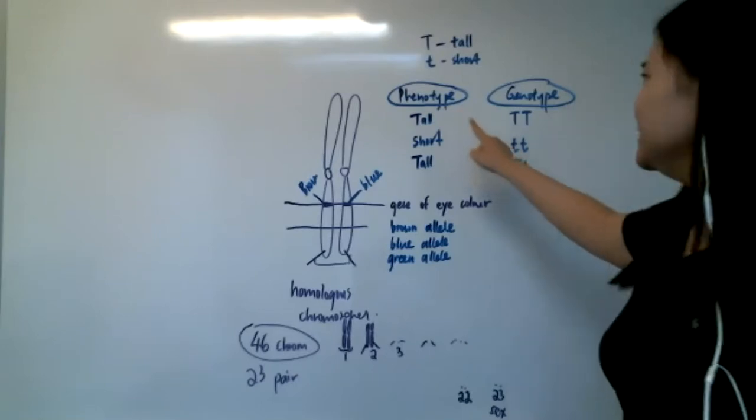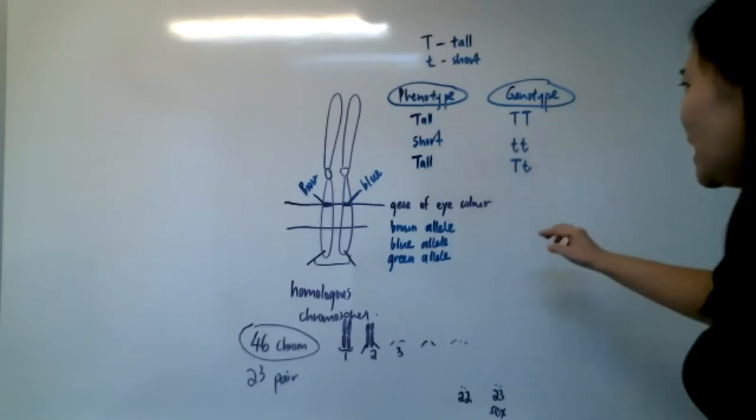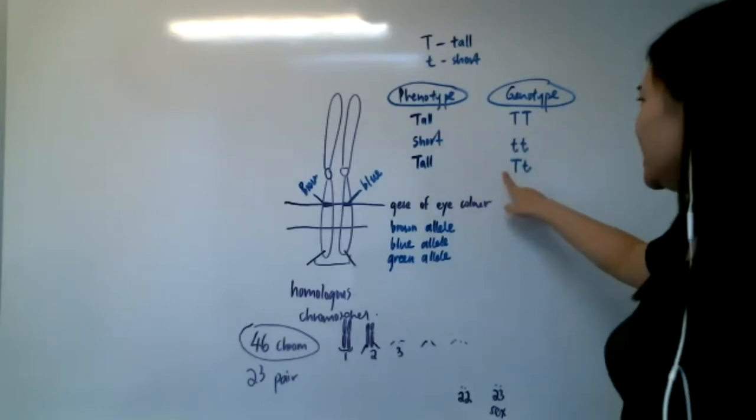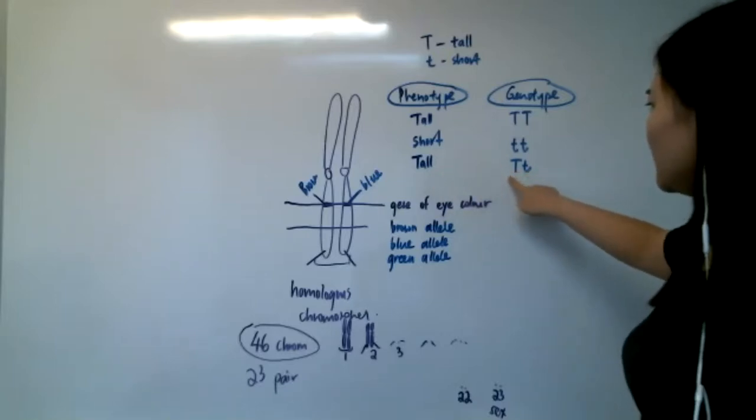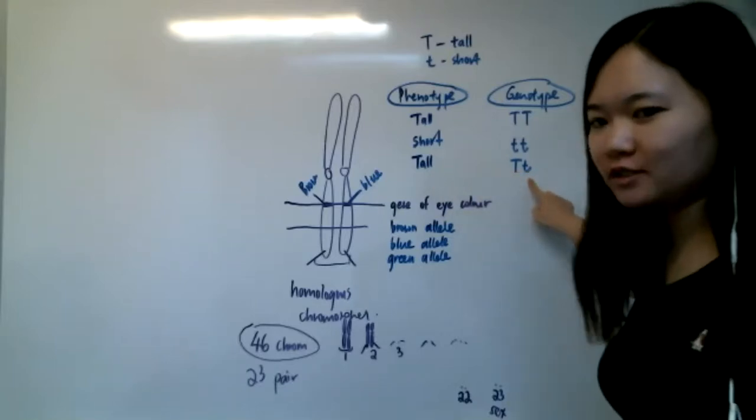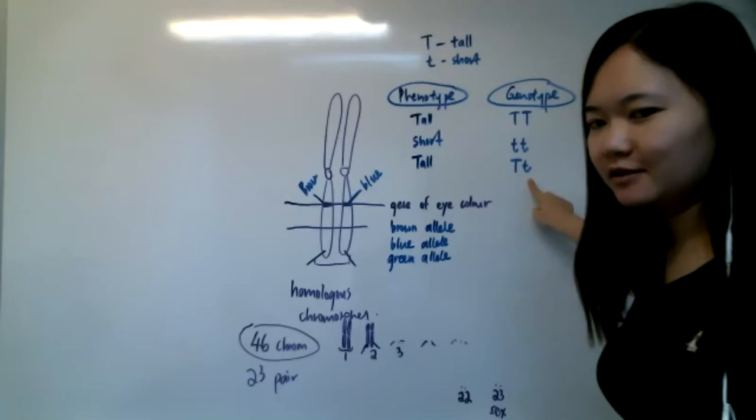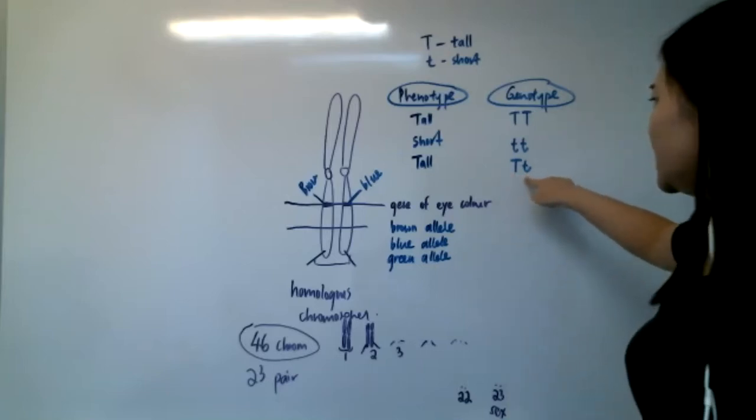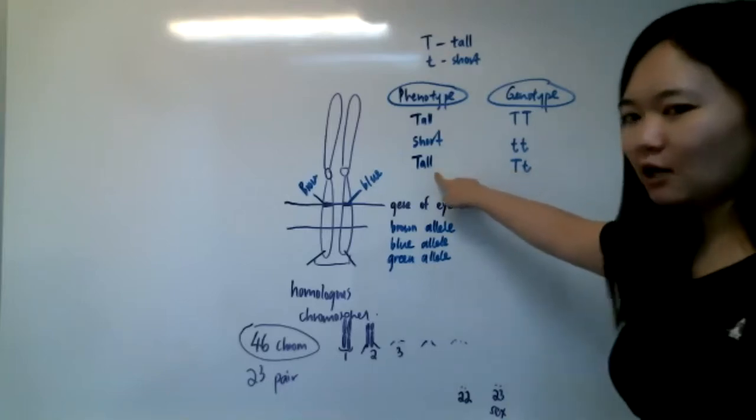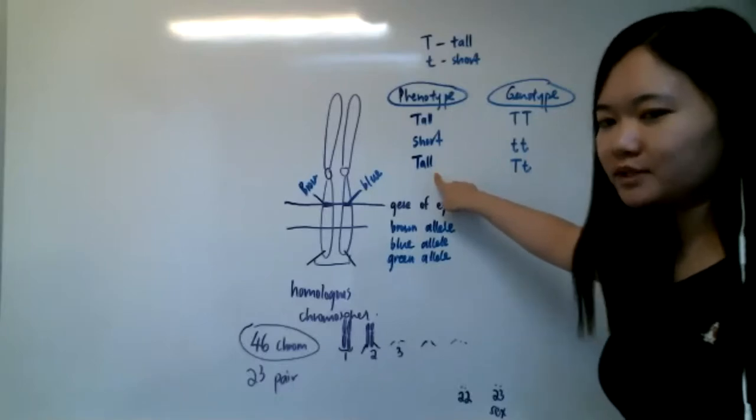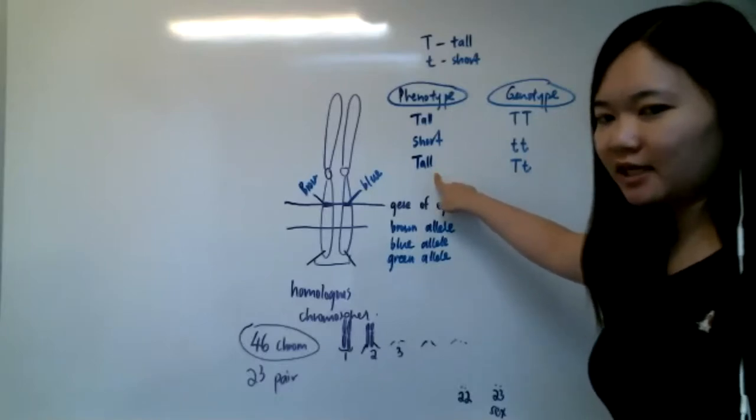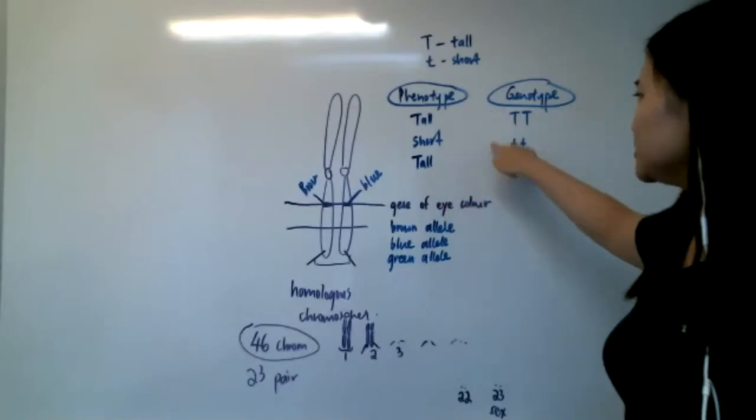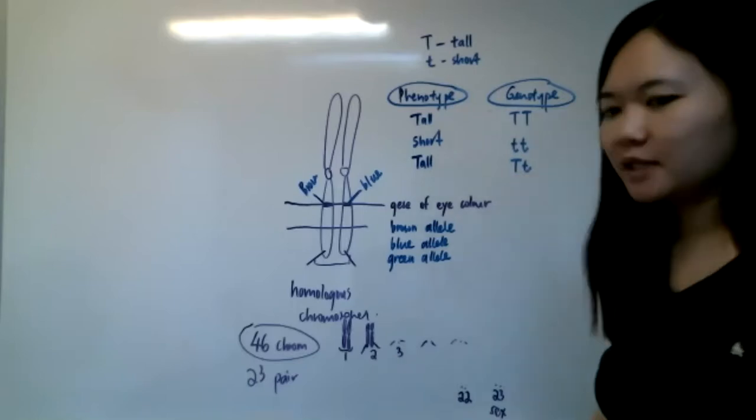My genotype - I could be tall, but I probably have a hidden short allele in me, something like that. So this is genetic makeup. This is the ultimate trait you observe from the person. Phenotype is what you observe, genotype is your genetic makeup.